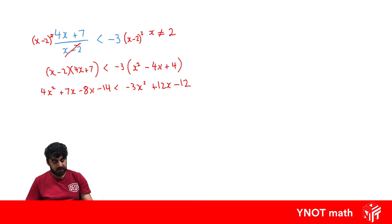Take everything to one side keeping the x squared term positive, so we'll take everything to the left-hand side. So we're going to add 3x squared to both sides, so we're going to get 7x squared. 7x minus 8x is minus x minus another 12x is minus 13x. Then we have minus 14 and we're going to add 12, so we're going to get minus 2 is less than 0.